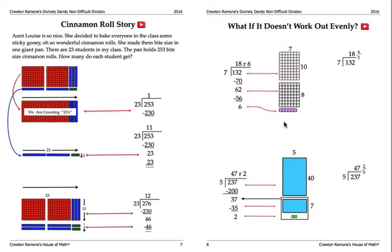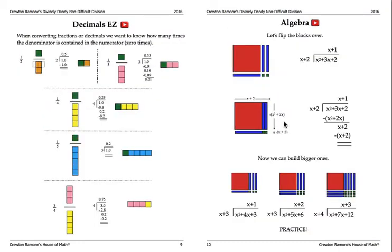And then here's decimals, and of course went to algebra a little bit. I do some algebraic division: how many times is x plus 2 contained in x squared plus 3x plus 2? Well, x plus 1 times. Now it starts to make sense and it's very clear to the students, very easy to understand.